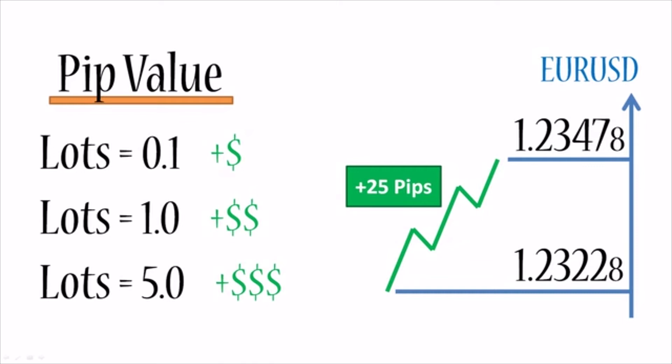Those are the basic concepts around pip value, and understanding them is enough to grasp live real trading. What we're going to do now is look at the euro/dollar example in more detail and go through calculations to translate pips into dollars, then derive a general formula for pip value. If you don't want to get into the mathematics, feel free to skip to the next tutorial — I'll bring up the result at the beginning of it. Otherwise, stick around as we dive in right now.